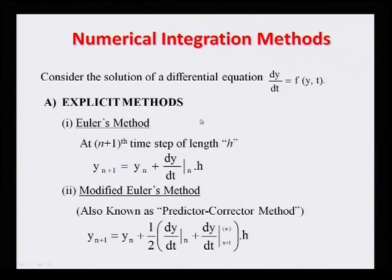The explicit methods include the Euler method, the modified Euler method, Runge-Kutta methods, and many other methods proposed by different scientists and mathematicians. Let us see what the Euler method is.